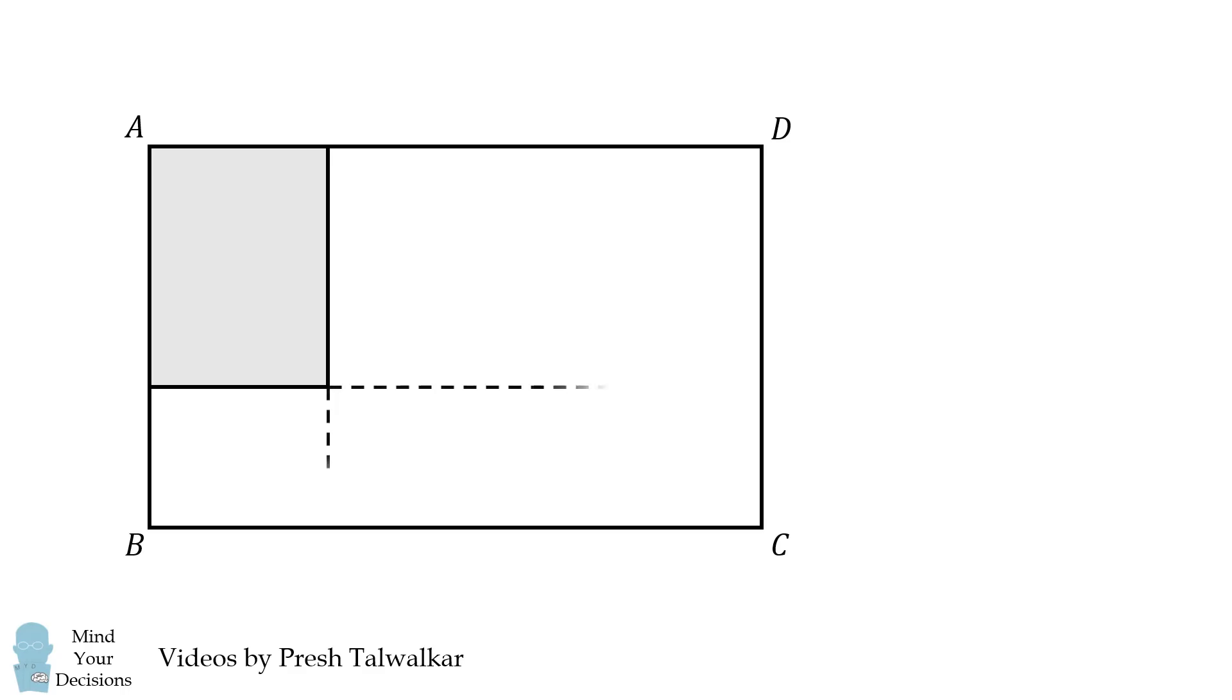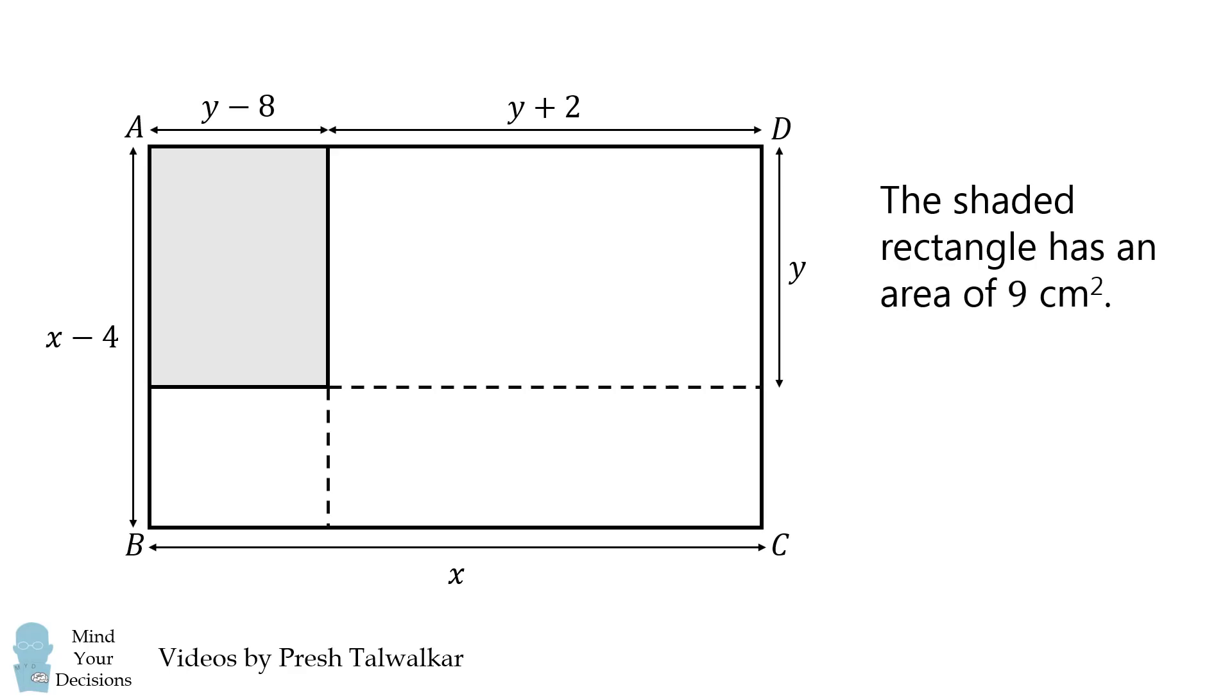Rectangle ABCD is divided into smaller rectangles. All of the dimensions in this diagram are given in centimeters, and the diagram is not drawn to scale. The shaded rectangle has an area of 9 square centimeters. Find the area of rectangle ABCD.